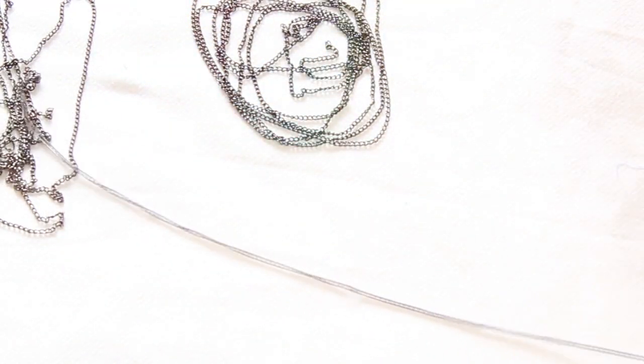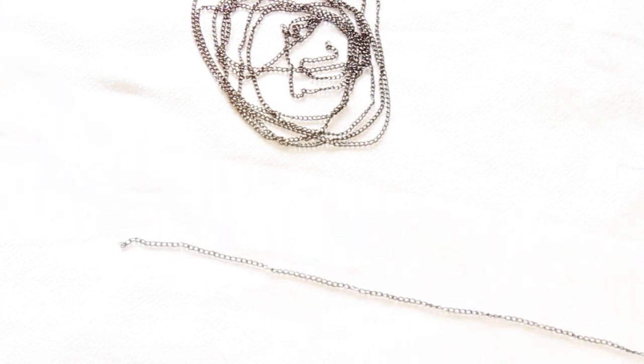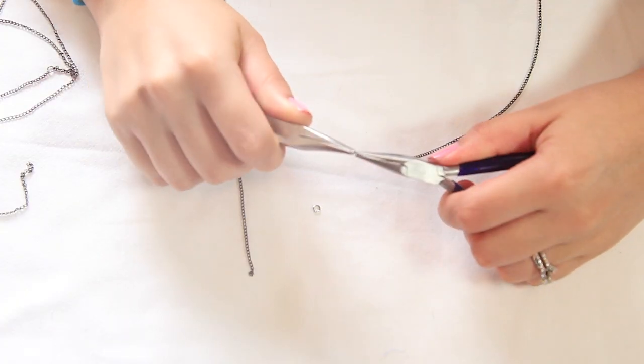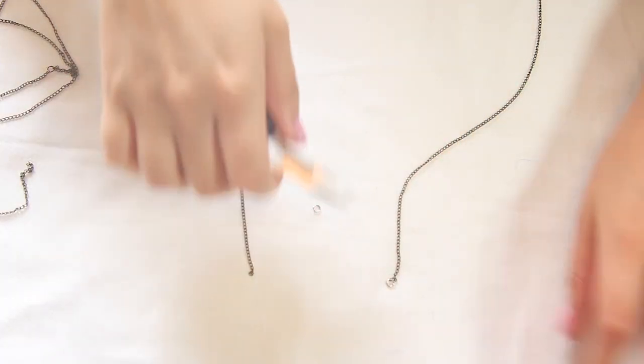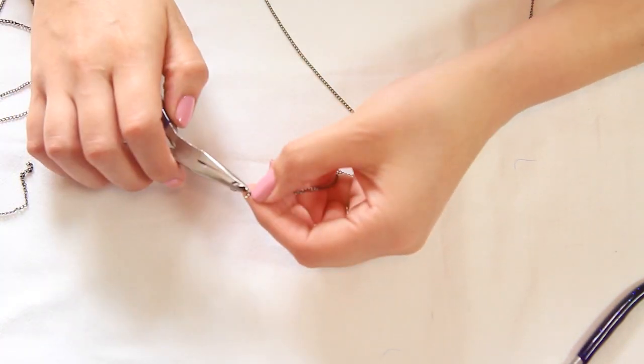A really good way to measure how much chain you'll need for your body is putting the chain from your shoulder to the floor. So you're gonna need two of those. You're going to grab those two very long chains and attach a jump ring at each end. And on one of the ends you're going to attach a clamp.